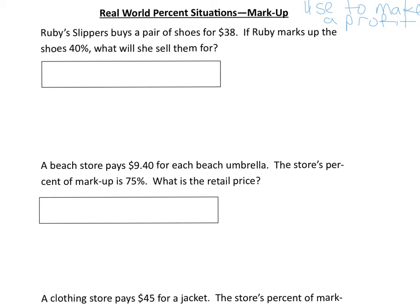Notice again, we still have our bars to help us visualize and help organize the numbers, the percents, and all that stuff. The first problem says Ruby Slippers buys a pair of shoes for $38. If Ruby marks up the shoes 40%, what will she sell them for? This means that she has 100%, which is the $38, but she marks them up, adding 40%. This means that there is a total of 140% in this problem, because we have to know the original price of $38, and then she has to mark it up — she's going to add money on.